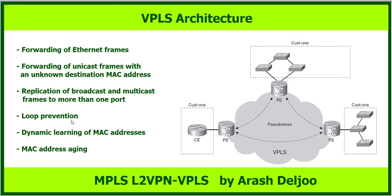Loop prevention: when one PE receives a broadcast frame, it does not forward it over other pseudo-wires — this is split horizon in VPLS. If you don't have a full mesh of connections, you need to enable spanning tree, which will be explained in future videos. Dynamic learning of MAC addresses works the same as on a normal switch in the PE router. And finally, we have MAC address aging.